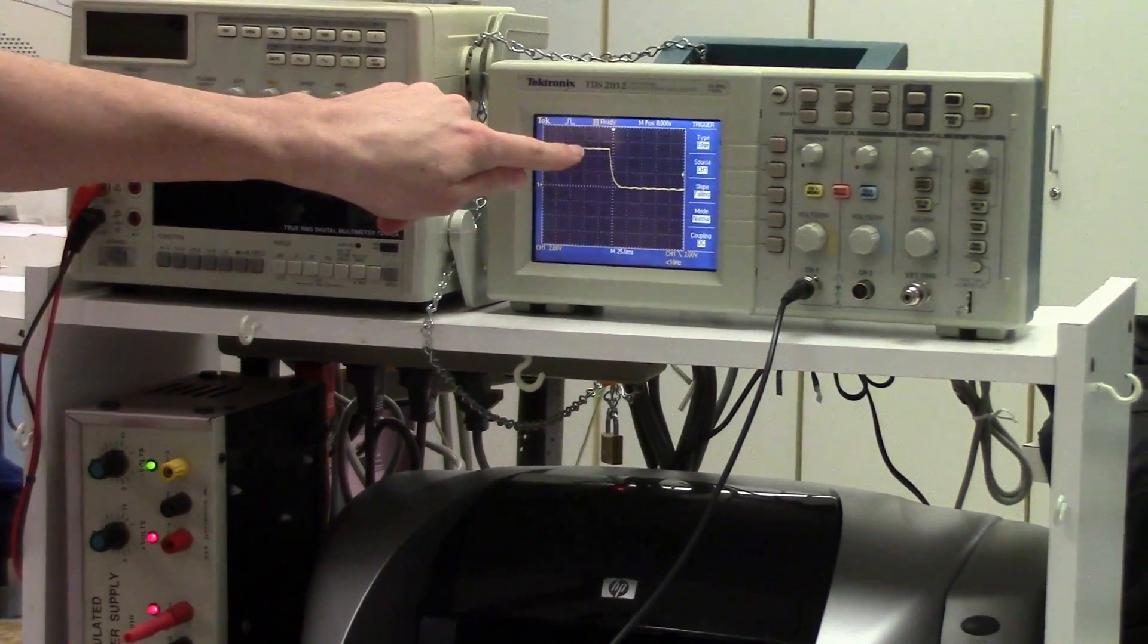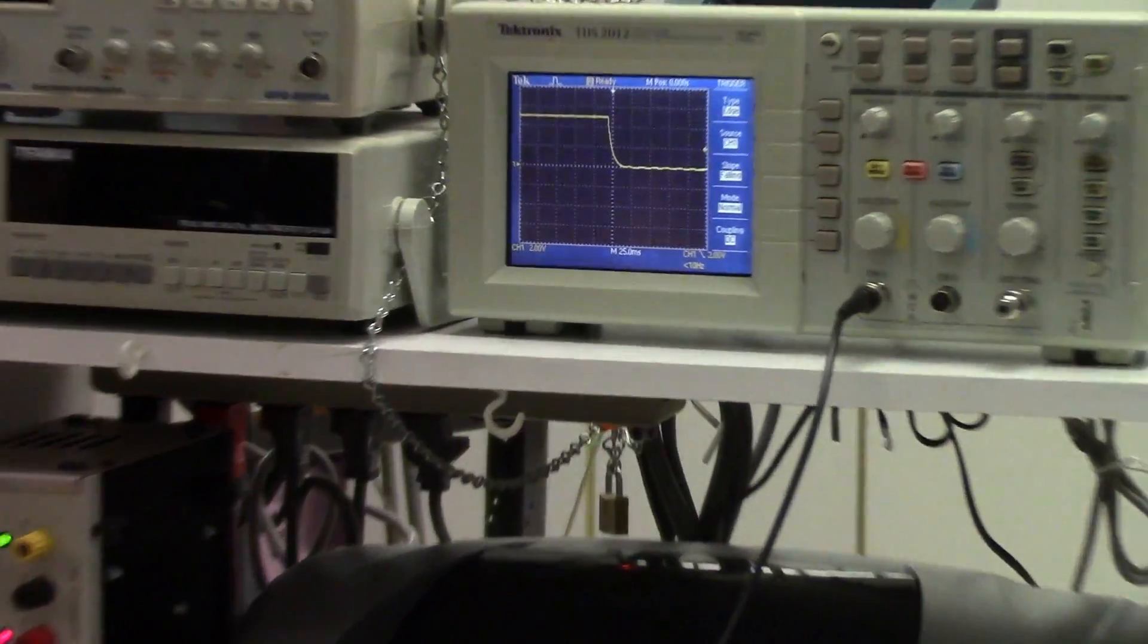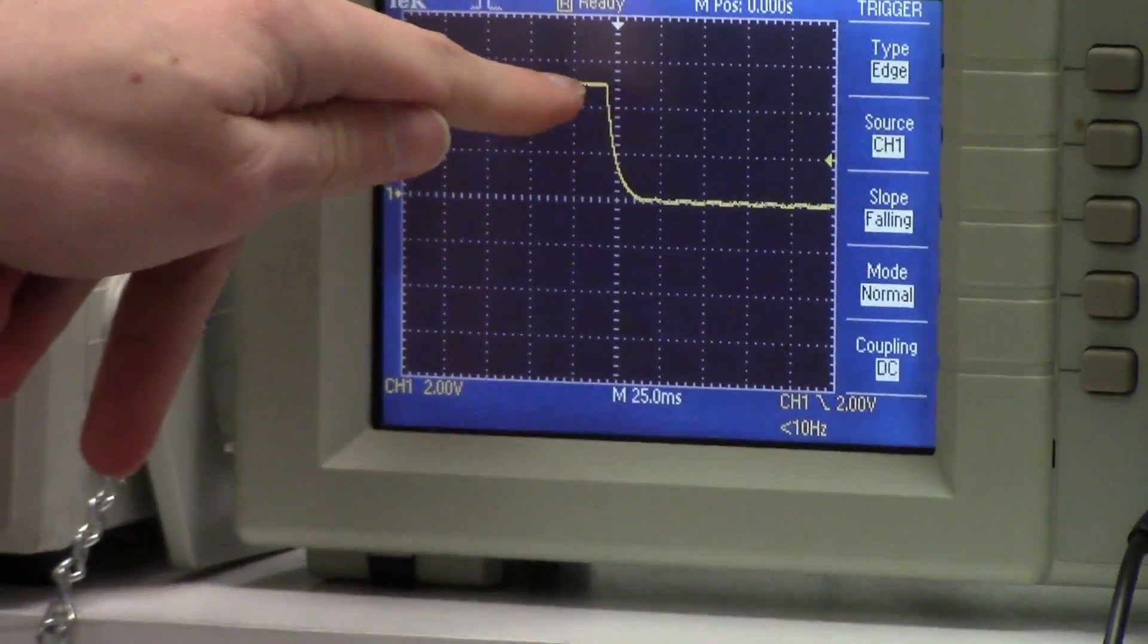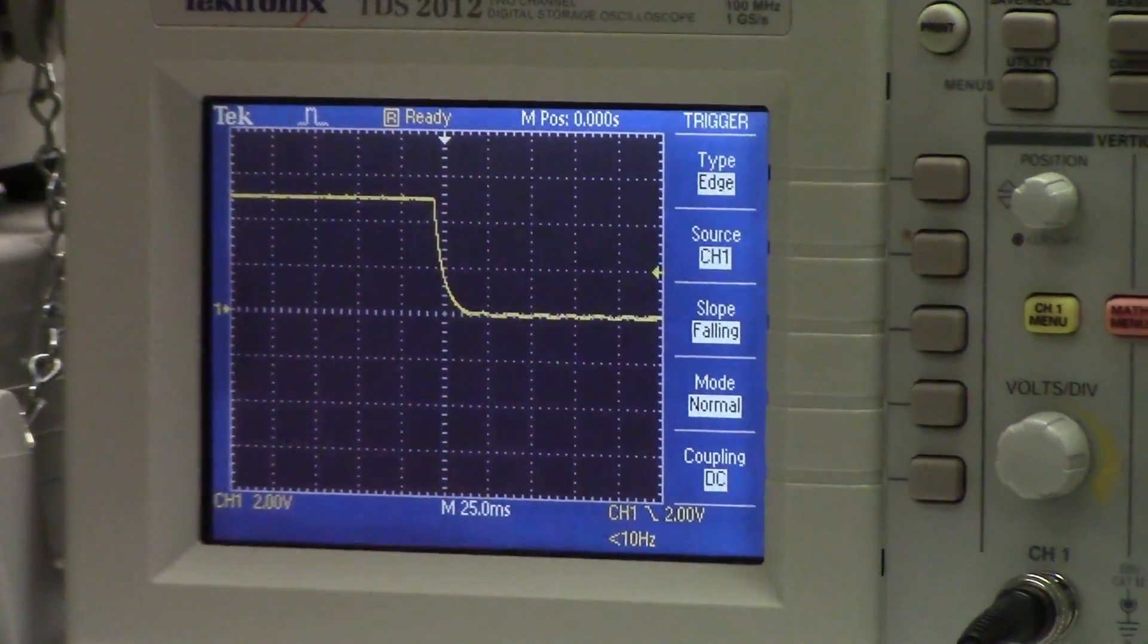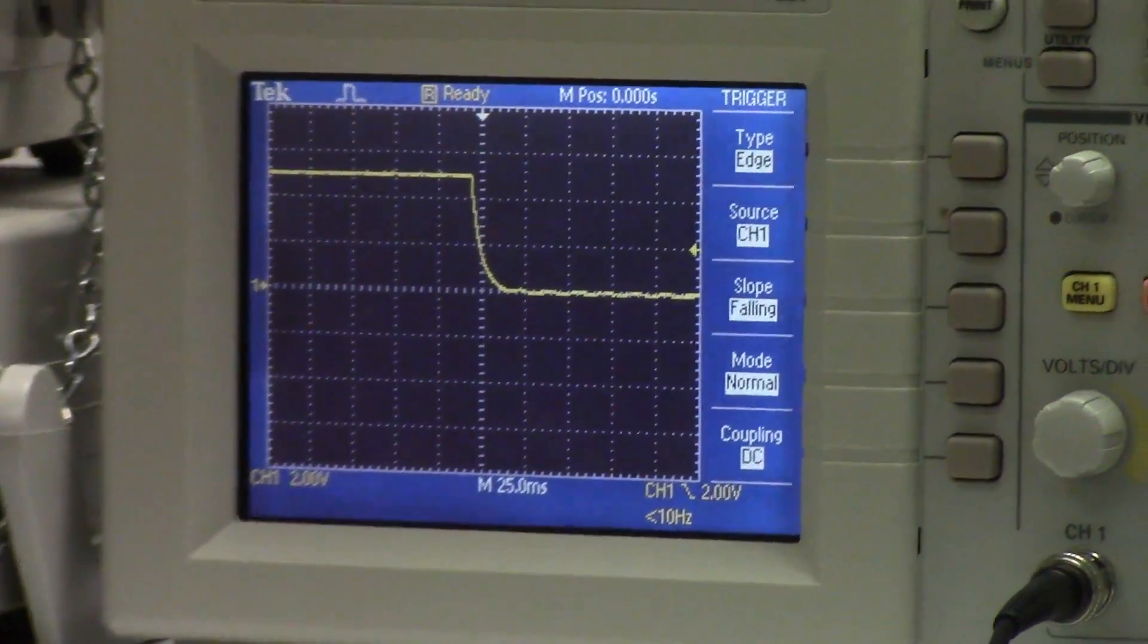You see how this line curves down? Now, that shows us that the charge, when we disconnected the battery, didn't go away right away, that there was something holding onto the charge, and that something could only have been our capacitor.